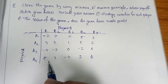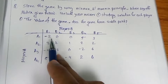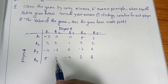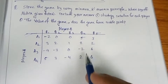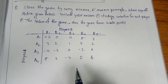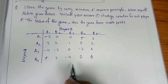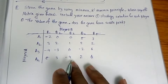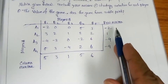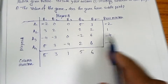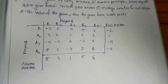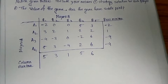In parallel, we find the maximum value column-wise for each column. The column-wise maximum values are: column 1 is 5, column 2 is 3, column 3 is 1, column 4 is 5, and column 5 is 6. These are called the column maxima. We have now completed Step 1 — finding the row minima and column maxima.